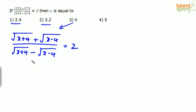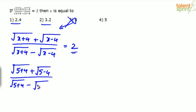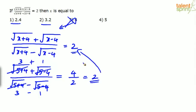Substitute option 4 (x=5): (√(5+4) + √(5−4)) / (√(5+4) − √(5−4)) = (√9 + √1)/(√9 − √1) = (3+1)/(3−1) = 4/2 = 2. This matches the right-hand side. So option 4, x = 5, is the correct answer. The method used here is substituting given options to check which satisfies the equation.